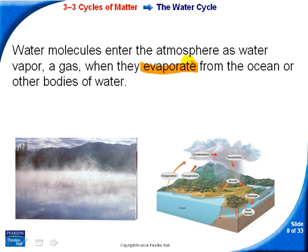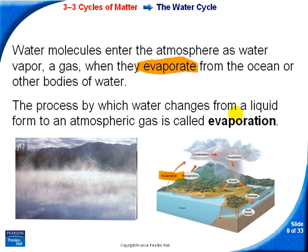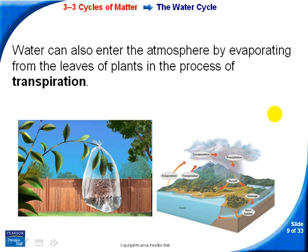Water goes into the atmosphere through evaporation — it comes from the ocean or bodies of water up into the atmosphere. When it goes from liquid to atmospheric gas, that's evaporation. Water also enters the atmosphere through transpiration, where water leaves the leaves of plants. That's represented by the arrow coming up from the trees going into the atmosphere.